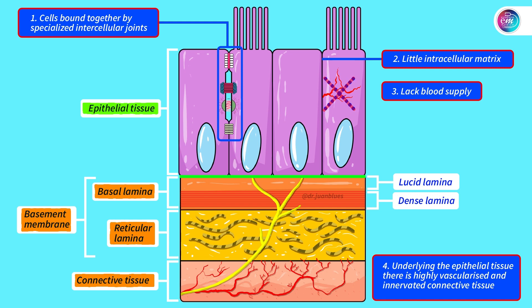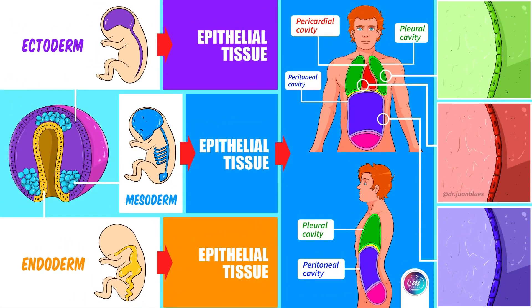Sixth, the epithelial cells present morphofunctional polarity — that's to say that depending on the region or zone of the epithelial cell, they can carry out different functions. Therefore, the plasma membrane of the epithelial cells is divided into three domains or regions which differ in composition and proteins and in the functions they perform: the apical domain, the lateral domain or area, and the basal domain. Seventh, the epithelial tissue originates from the three germ layers: it comes from the ectoderm, the mesoderm, and the endoderm.